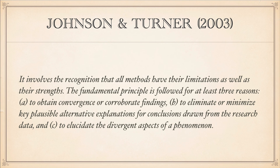A great quote from Johnson and Turner in our course textbook says about mixed methods research: it involves the recognition that all methods have their limitations as well as their strengths. The fundamental principle of mixed methods is followed for at least three reasons: A) to obtain convergence or corroborate findings; B) to eliminate or minimize key plausible alternative explanations for conclusions drawn from the research data; and C) to elucidate the divergent aspects of a phenomenon. Each of the two methods can inform us about the reasons, the rationale, and the amount of change we see, providing a much greater depth of understanding of the phenomenon we're studying than if we did just one type.